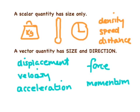Now a scalar quantity is a quantity that has size only. So we are talking about examples such as mass, temperature, time, density, speed or distance. With these quantities it only matters how big the quantity is. Direction isn't relevant and has no significance.